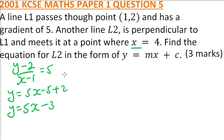So, that is the equation of the line. Because the two lines are perpendicular, it means that the second gradient is minus 1 over 5.